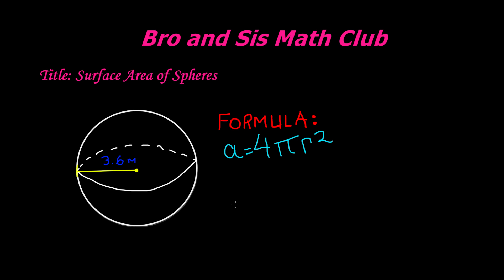The formula for finding the surface area of spheres is 4 times pi times radius squared, or 4πr².